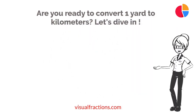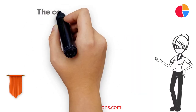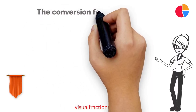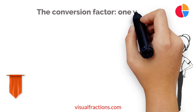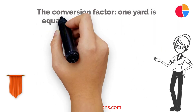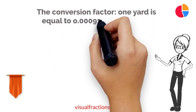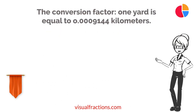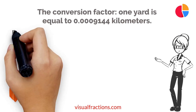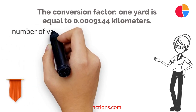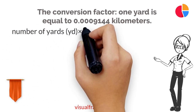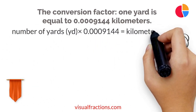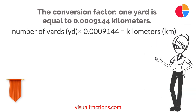First, let's recall the conversion factor. 1 yard is approximately equal to 0.0009144 kilometers. To convert yards to kilometers, all you need to do is multiply the number of yards by this conversion factor.